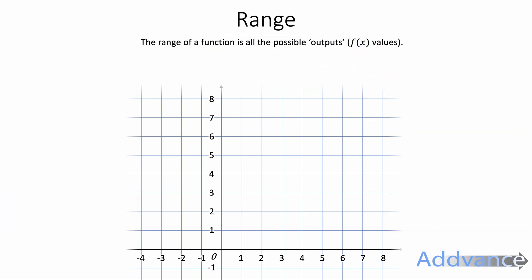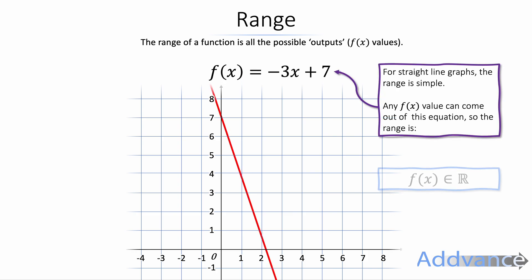Now let's look at ranges here. The range of a function is all the possible outputs or f of x values. Let's start with a straight line graph. f of x is minus 3x plus 7. And the range here is f of x belongs to all real numbers. Because any number can come out of this function.